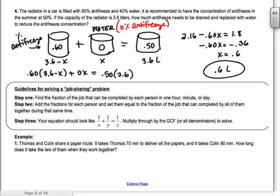All right, job sharing. So we've done these before, so this should kind of be a review. So it says find the fraction of the job that can be completed by each person in one hour or one minute or whatever time you're talking about. Add the fractions for each person and set them equal to the fraction of the job that they can complete all together. So your equation should look like 1 over X plus 1 over Y equals 1 over Z. Okay, so if Taylor and Melvin were working together, it would be 1 over the amount of time it takes for Taylor to work plus 1 over the amount of time it takes for Melvin to do the job. And that equals 1 over the amount of time it takes for Melvin to work together. Do you guys remember these?